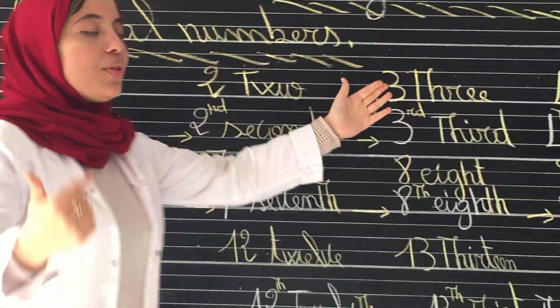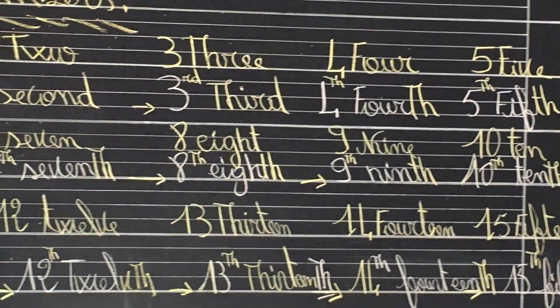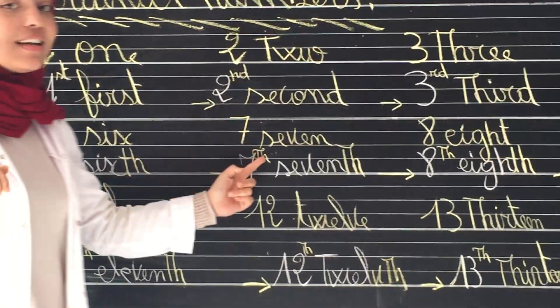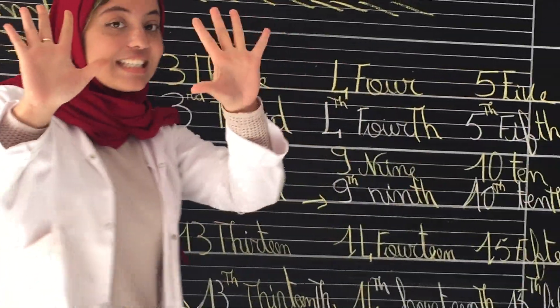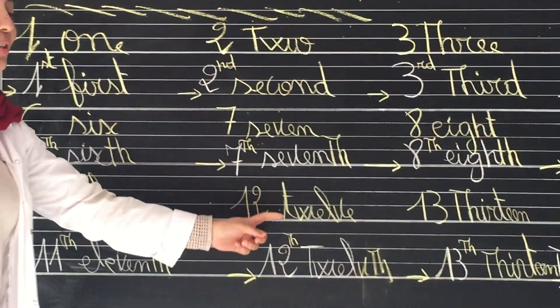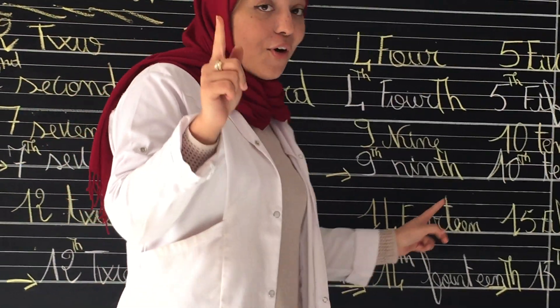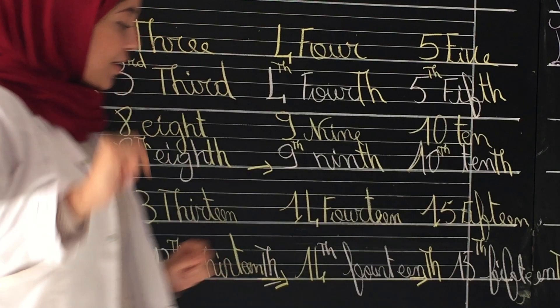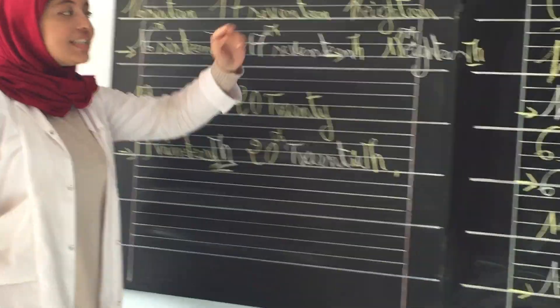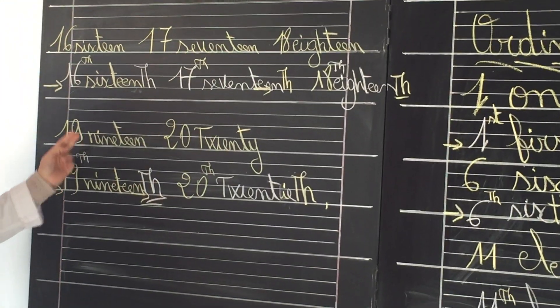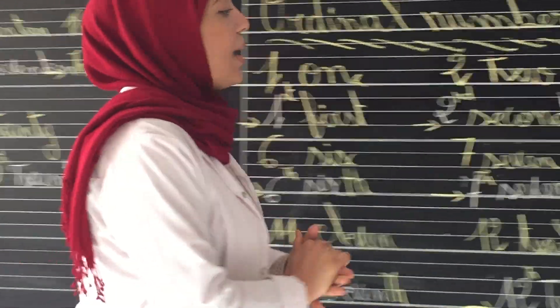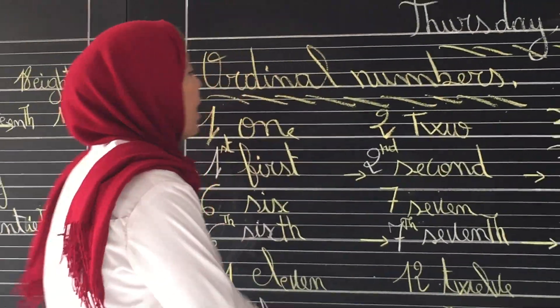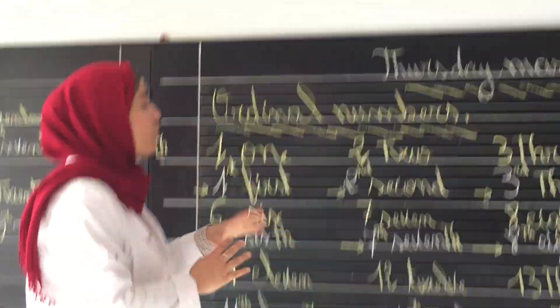Now we have numbers: 1, 2, 3, 4, 5, 6, 7, 8, 9, 10, 11, 12, 13, 14, 15, 16, 17, 18, 19, 20. Very good, my dear students. So now we are going to see the ordinal number of each number.